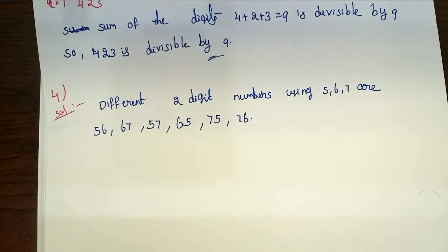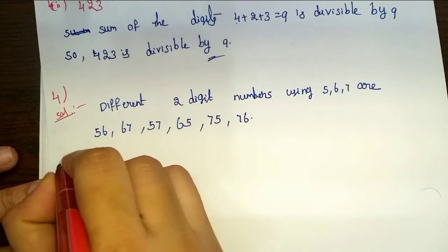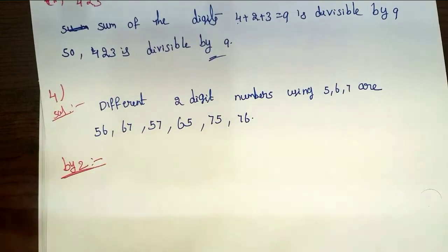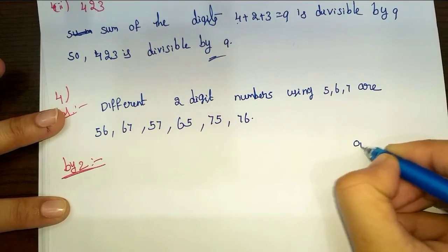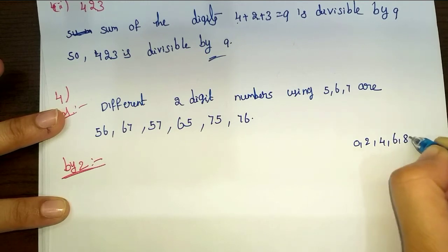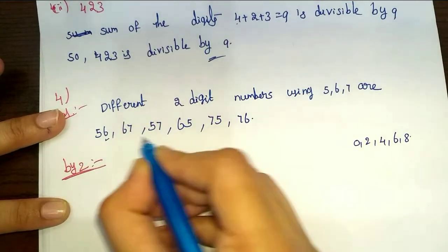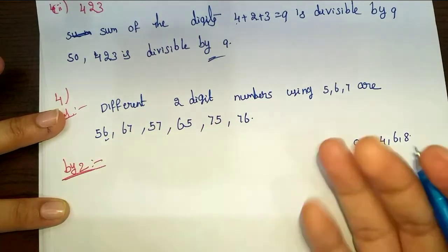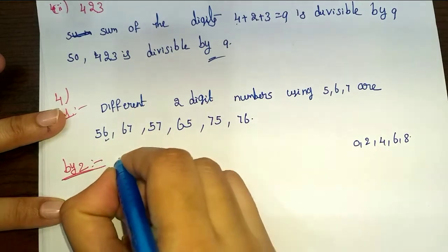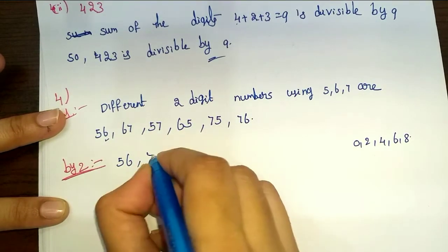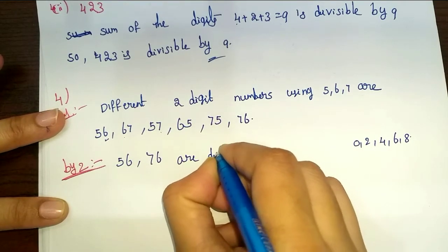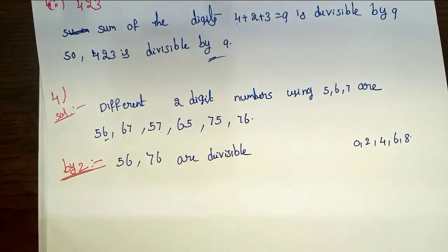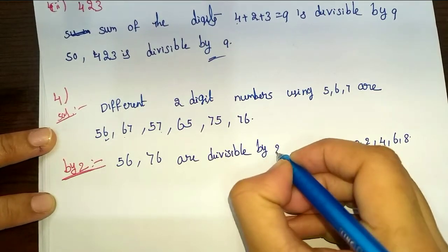Check first by 2. A number is divisible by 2 if the last digit is 0, 2, 4, 6, or 8. So 56 — last digit 6, unit place divisible by 2. And 76 — last digit 6, divisible by 2.